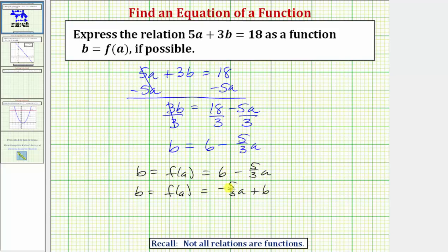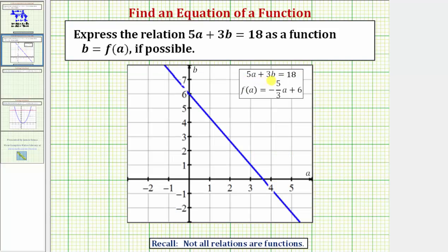Now before we go, let's look at this graphically. Whether we graph the relation 5a plus 3b equals 18, or the function f of a equals negative 5 thirds a plus six, or f of a equals six minus 5 thirds a, of course we get the same line on the coordinate plane.